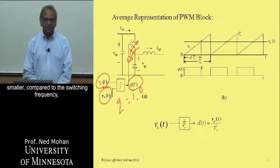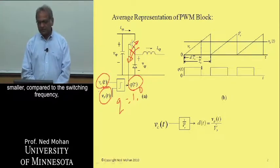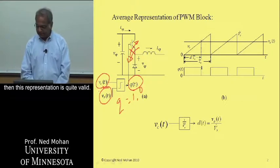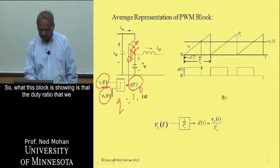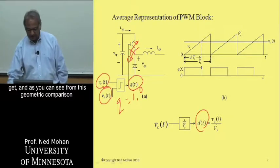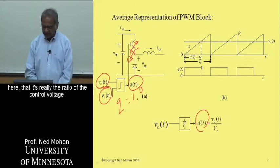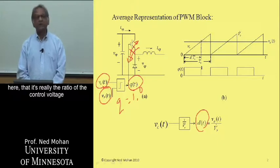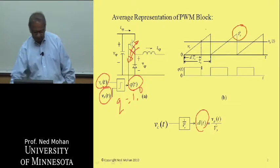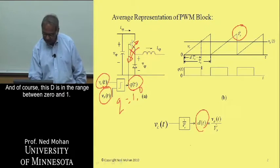If the frequency at which the control signal is varying is one-tenth or smaller compared to the switching frequency, then this representation is quite valid. The duty ratio is the ratio of the control voltage divided by the peak of the sawtooth waveform, and D is in the range between 0 and 1.